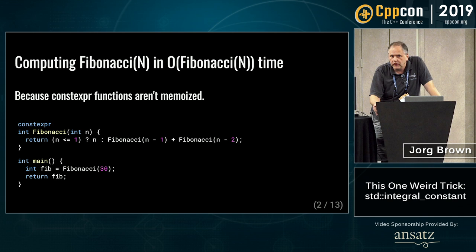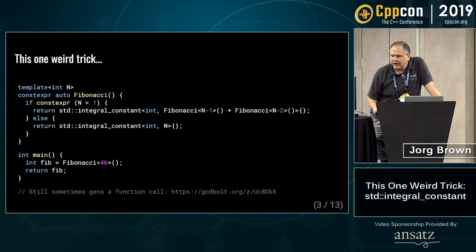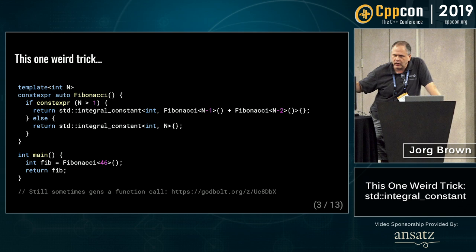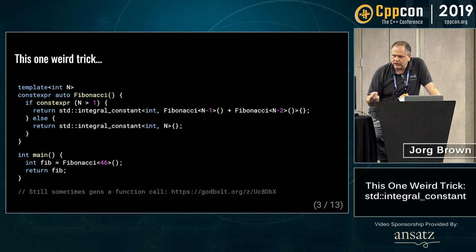Now let's do the same thing — the same exact algorithm — except this time we're going to use constexpr and an auto return type, which allows us to take the return type of the function and put the value we're trying to compute in the return type. By doing this, partly because it's templated and also because the value is in the type, we can actually force this to be memoized. This both compiles fast and runs immediately. However, if you're compiling for debug or with inline functions turned off, this still actually makes one function call.